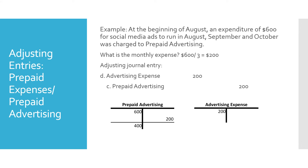We also made an expenditure of $600 for social media ads that were to run evenly across August, September, and October, and we charged that to prepaid advertising because it benefits future periods. So we have a $600 balance in prepaid advertising. The monthly expense is $600 divided by three months, which equals $200 per month. We debit advertising expense $200 to reflect the current month's expense and credit prepaid advertising $200. Prepaid advertising had a $600 debit balance; after the $200 credit it has a $400 debit balance, reflecting the cost of ads that have not yet run. Advertising expense has a $200 balance reflecting the cost of ads that ran in August.